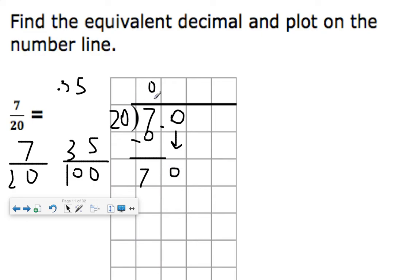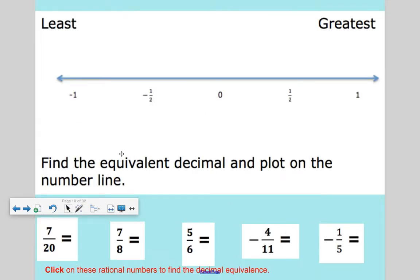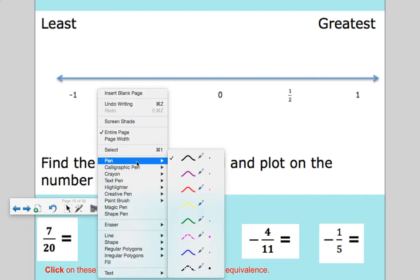How many groups of 20 go into 70? So that's 60. 70 minus 60 is 10. Have another 0. Bring it down. How many groups of 20 go into 100? 5 groups. And so there is our 35 hundredths. So we know 7/20 is equivalent to 35 hundredths.